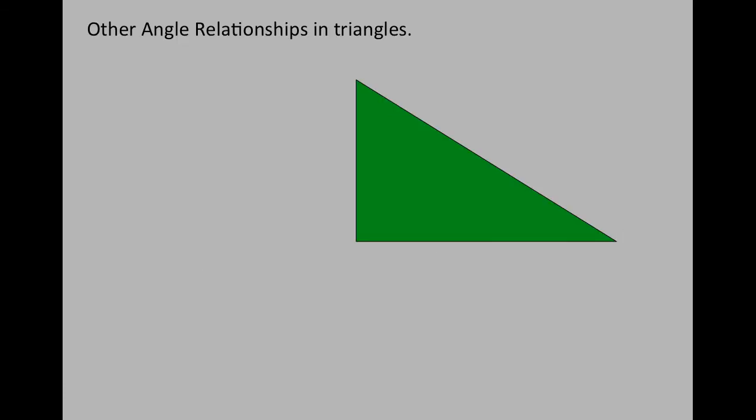Other angle relationships that exist in triangles, specifically in right triangles. In order to have a right triangle, I have to have a 90 degree angle.